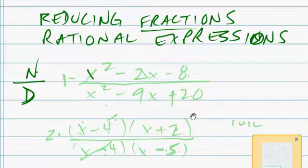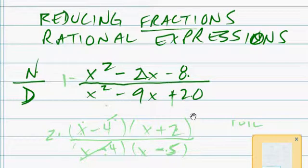So let's take a look at reducing this rational expression: x squared minus 2x minus 8 over x squared minus 9x plus 20.